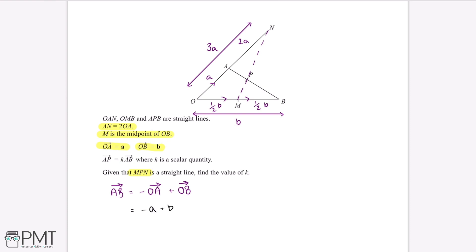The next thing we can do is work out what vector MN will be equal to. MN will be equal to negative MO plus ON. OM is half B, so negative OM is negative half B. And ON is equal to 3A. Therefore MN equals 3A minus half B.